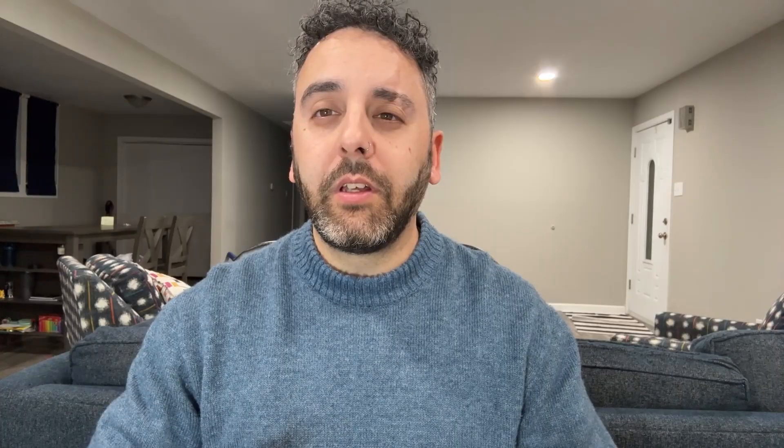First up is confirmation bias. This is when we only seek out information that supports what we already believe, ignoring anything that might contradict us. For example, imagine you believe a particular diet is the best — you might only follow influencers who promote that diet, ignoring evidence that suggests otherwise. To overcome this, seek out opposing points of view and ask yourself: prove me wrong. Challenge your own beliefs — and that's actually a superpower in itself.